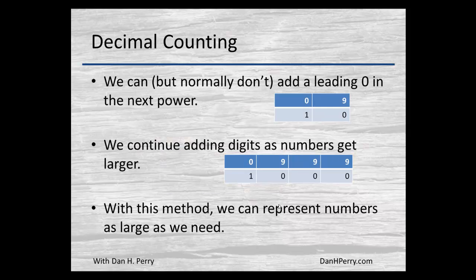With larger numbers we repeat the same process. Now we typically don't show leading zeros when we work in decimal. What we're going to find is working in binary we will show those leading zeros.